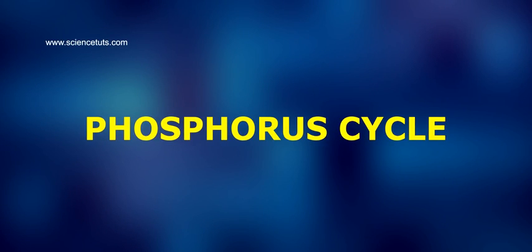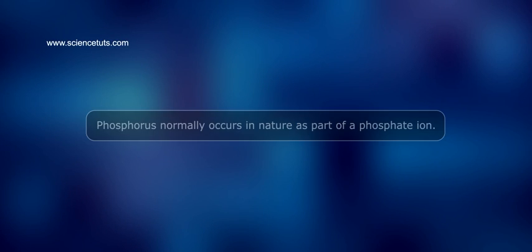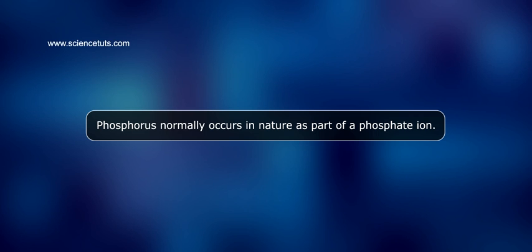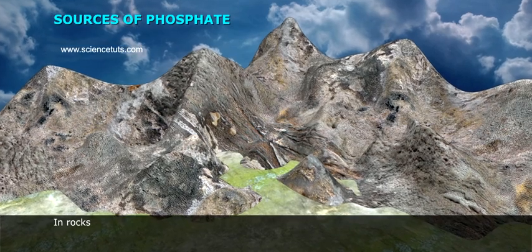Phosphorus cycle. Phosphorus normally occurs in nature as part of a phosphate ion. Sources of phosphate are found as salts in ocean sediments and in rocks.